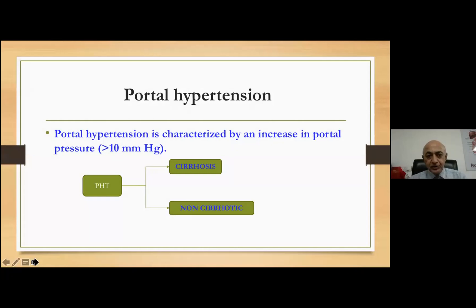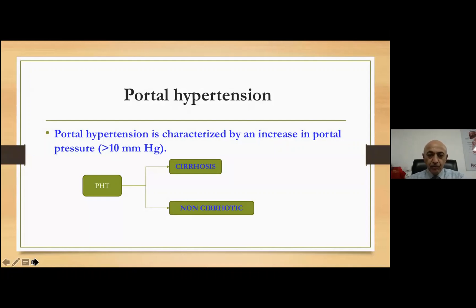Portal hypertension is defined as an entity in which there is an increase in the portal pressure beyond the reading of 10 mmHg. So whenever the portal pressure is more than 10 mmHg, this is called portal hypertension.